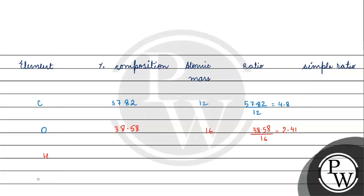Then we have hydrogen, which is 3.60%, atomic mass 1. Divided by 3.60, we have 3.60. This is the simple ratio.